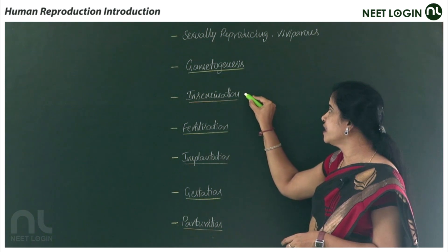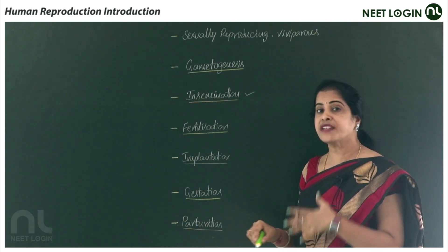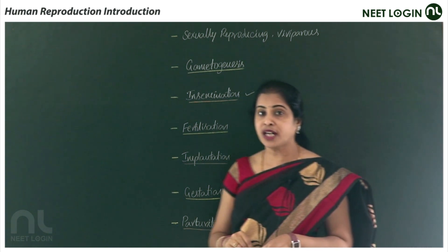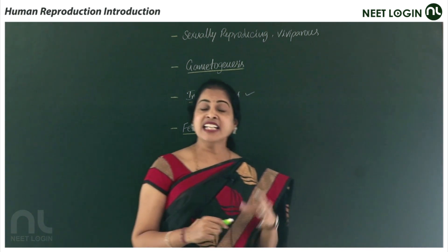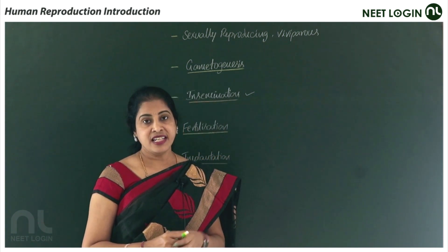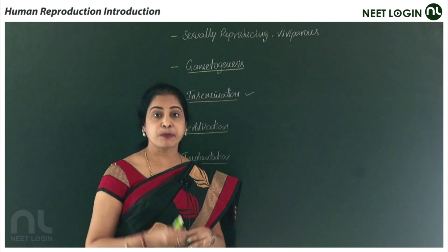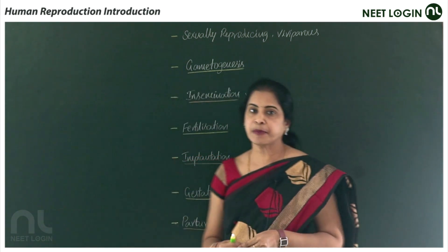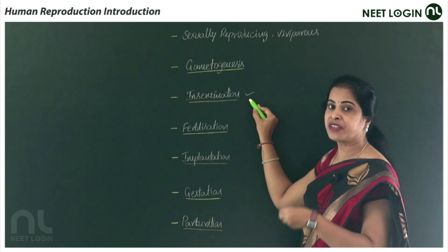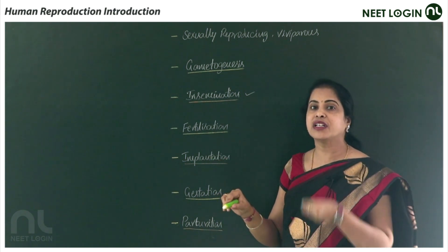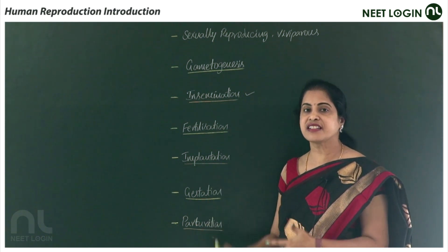The next reproductive event is insemination. The female gametes, ova, are non-motile, while the male gametes, sperms, are motile. The introduction of semen — the male gametes — into the female reproductive tract is called insemination.